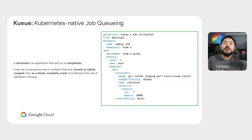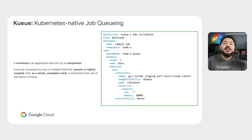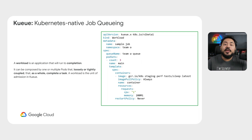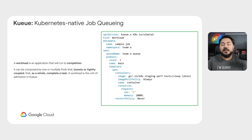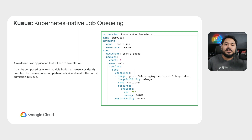A workload is an abstraction Kueue creates for your job. A workload is an application that will run to completion. Kueue does not manipulate the job object directly. Instead, it creates a workload and syncs its statuses and decisions to the underlying job. For this reason, we could also use other types of jobs with Kueue, instead of just the Kubernetes native job API.